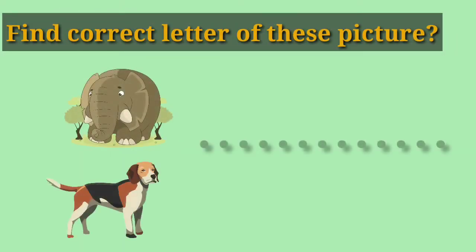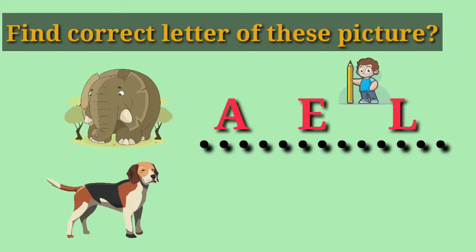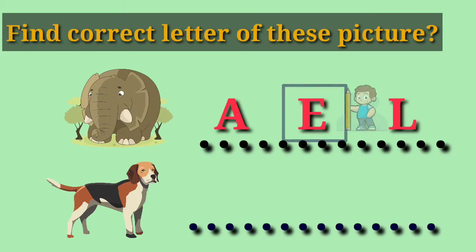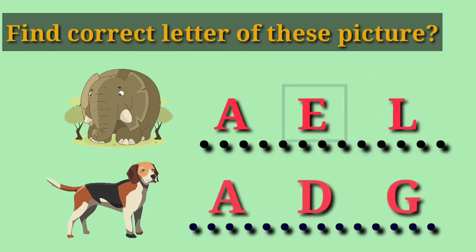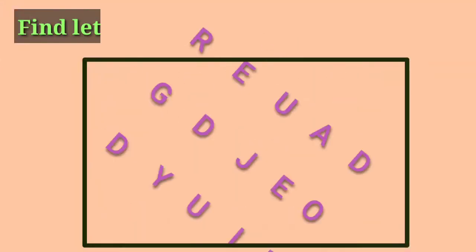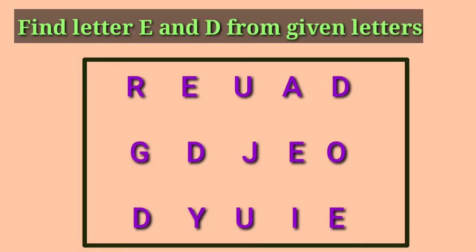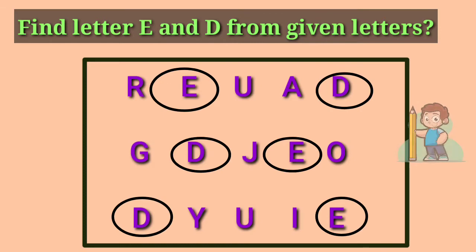Find correct letter of this picture. E for Elephant. D for Dog. Find letter E and D from given letters. Correct.